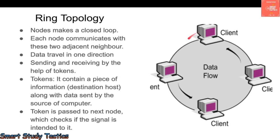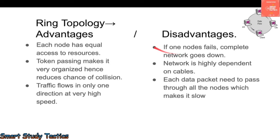If the token reaches a node that has the solution to the query, it is resolved there and sent back to the source computer. If not, the token is passed to the next computer, and so on. Each computer can only communicate with its adjacent neighbor computers — keep that in mind.